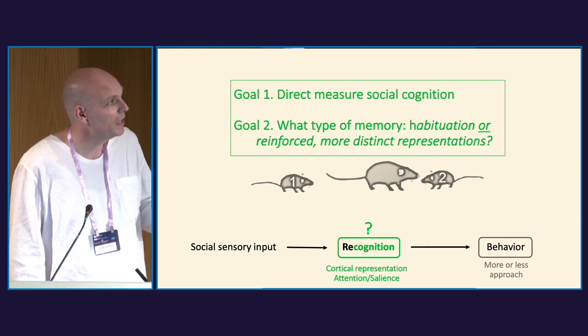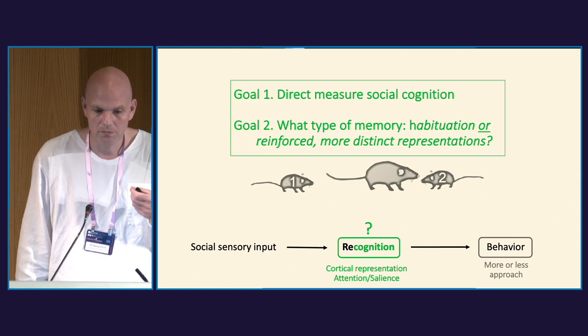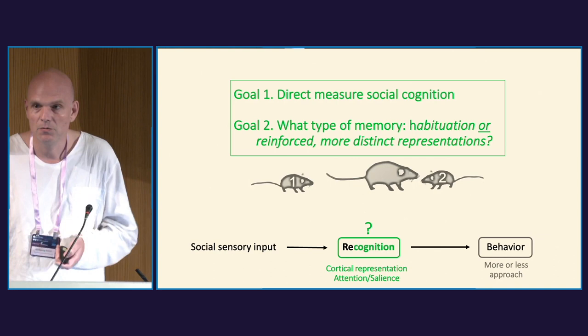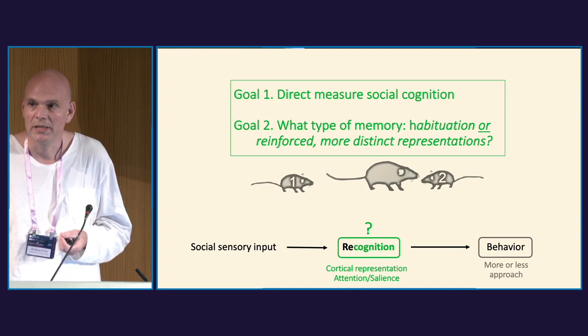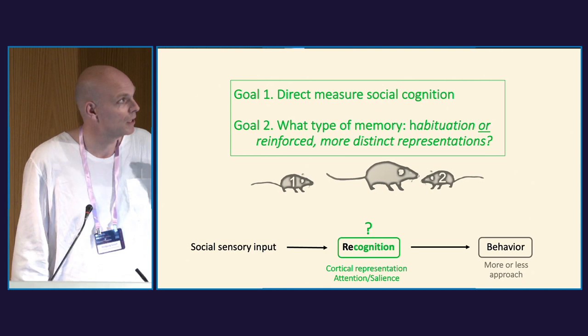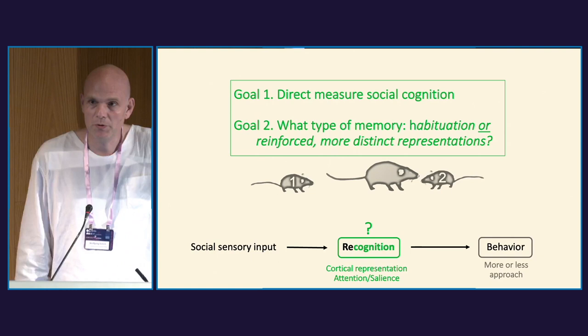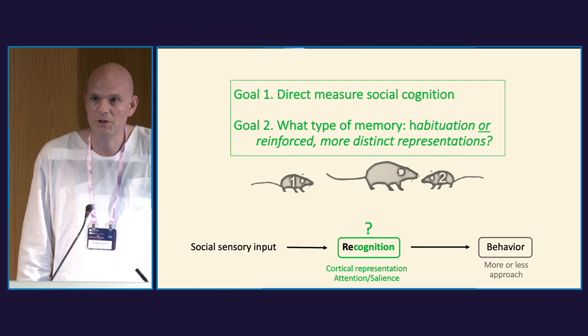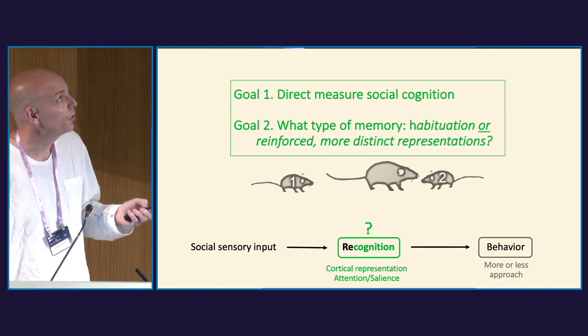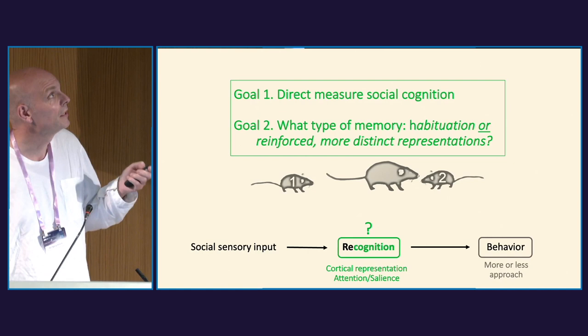Since this moved away from the standard approach of looking at behavioral output, we had to build a more direct measure of social cognition, with the second goal of examining the type of memory. Based on the habituation with lesser exploration, we built a biophysical model together with Christiane showing that it could be an intermediate-length duration memory — a habituation process due to repeated exposures. An alternative would be long-term memory that reinforces and makes the representation in the cortices more distinct.